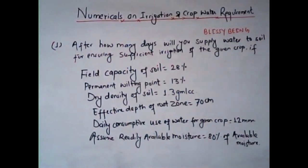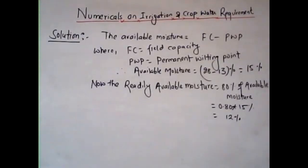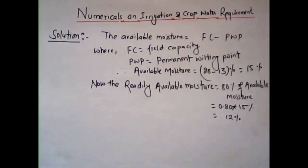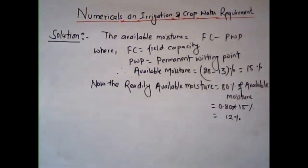In the given question, we have the field capacity of 28% and the permanent wilting point moisture content of 13%. We can easily find the available moisture by subtracting the permanent wilting point from the field capacity: 28% minus 13% equals 15% available moisture. Since the readily available moisture is 80% of the available moisture, the readily available moisture is 12%.